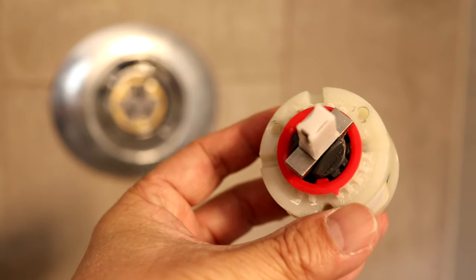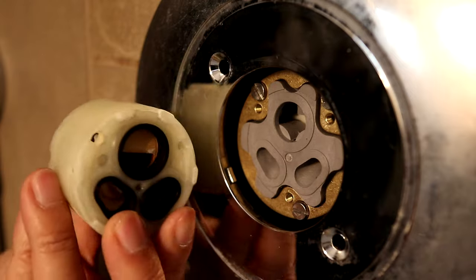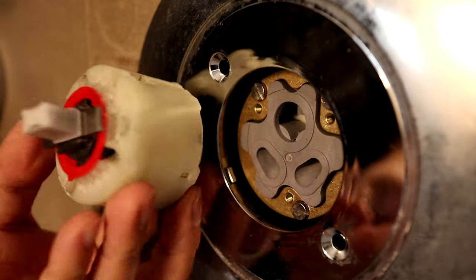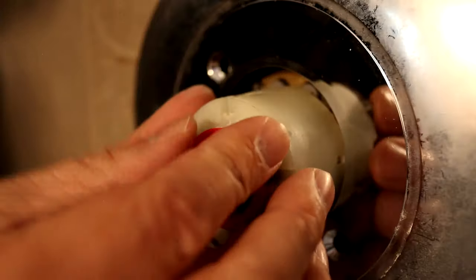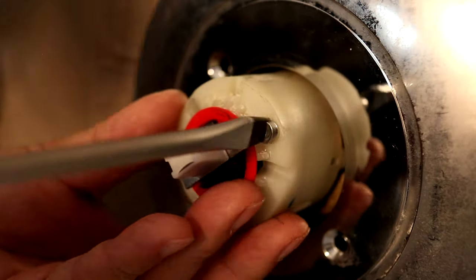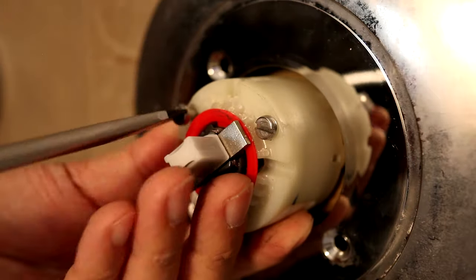Now it's time to reattach the shower valve. Be sure to line up the round valve opening at the top with the round opening on the pressure balancing unit. Using the three long screws, I'm going to tighten each screw a little bit at a time to get even pressure around the seals to prevent any leaks.